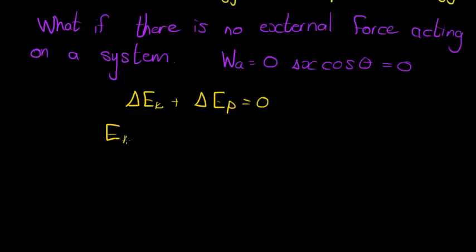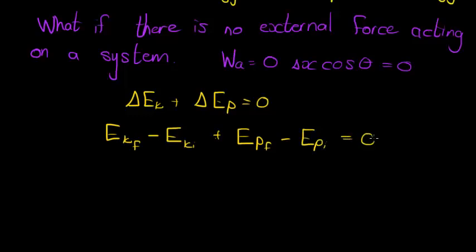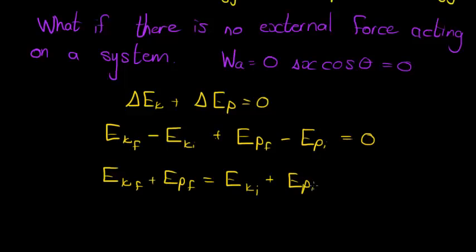The change in kinetic energy is the future kinetic energy minus the initial kinetic energy. If I add to this the change in potential energy — the future potential energy minus the initial potential energy — this whole sum must equal zero. In other words, KE_final + PE_final = KE_initial + PE_initial.